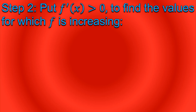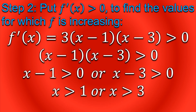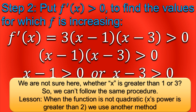Similarly to what we did earlier, we put f'(x) > 0 to find the values for which f is increasing. By doing so, we obtain that x is either greater than 1 or greater than 3. But this gives us very vague information — we are not sure whether x is greater than 1 or greater than 3. So when that happens, we cannot follow the same procedure as before. What we learn from this is that when the function is not quadratic, we use another method.